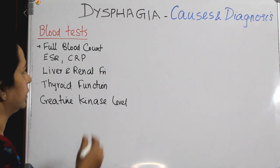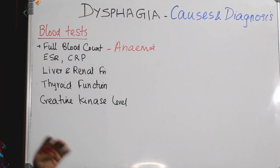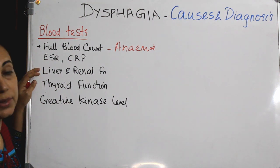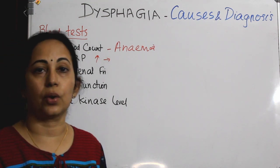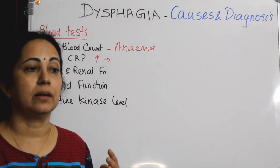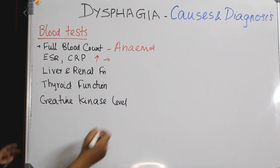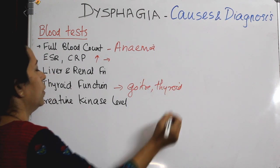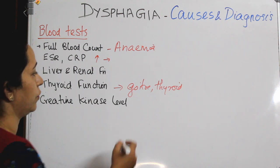Do a full blood count — because there is malabsorption, there is a chance of anemia, so hemoglobin should be checked. If erythrocyte sedimentation rate (ESR) and C-reactive protein (CRP) are increased, it can be due to malignancy or a chronic inflammatory disorder. Do a liver and renal function test if you suspect nutritional imbalance or metastasis to liver and kidneys. If you suspect goiter or thyroid malignancy, go for a thyroid function test. Creatinine kinase level will be elevated in cases of myopathies.